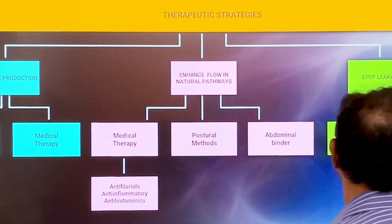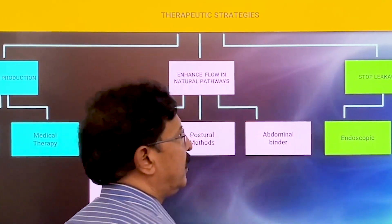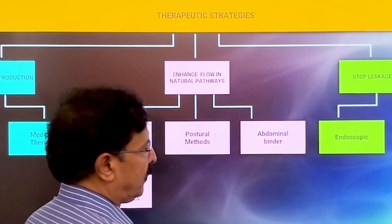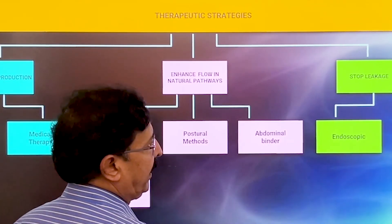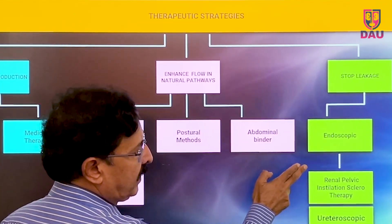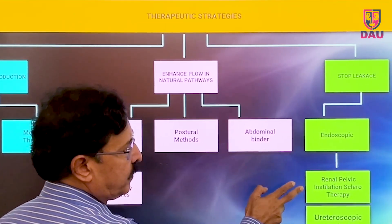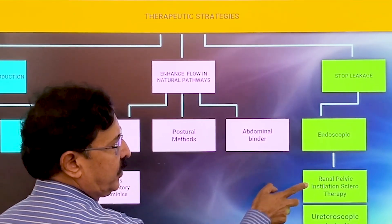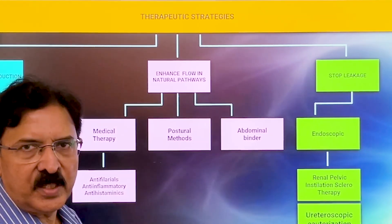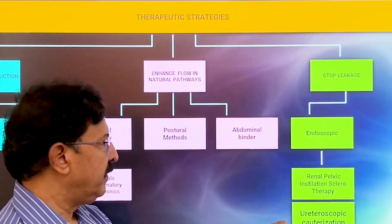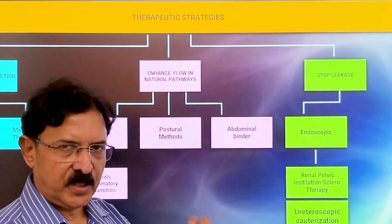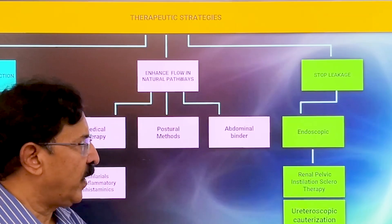Finally, to stop leakage of chyle in the urinary system, we can use endoscopic methods — meaning renal pelvic instillation sclerotherapy or even ureteroscopic cauterization of the leakage points.